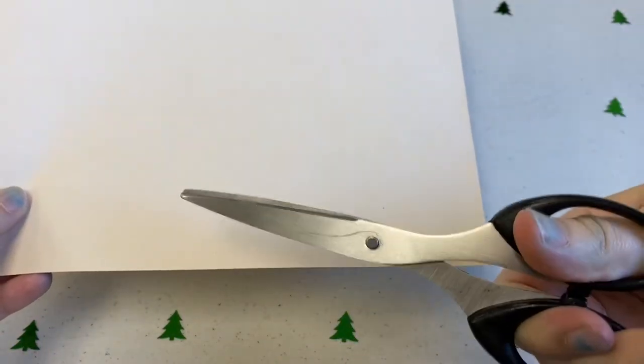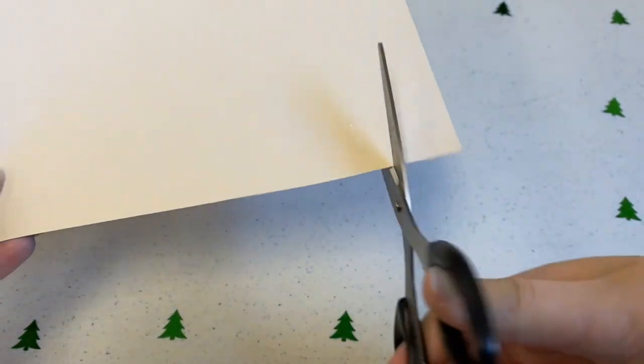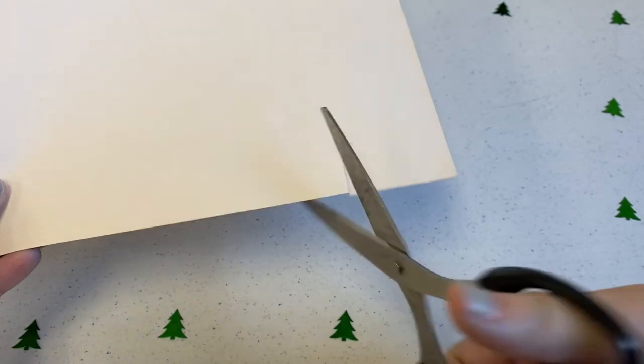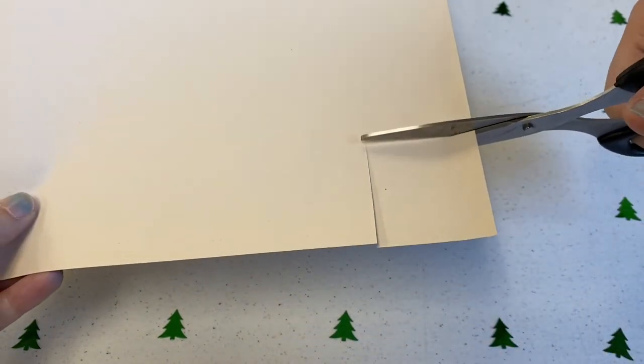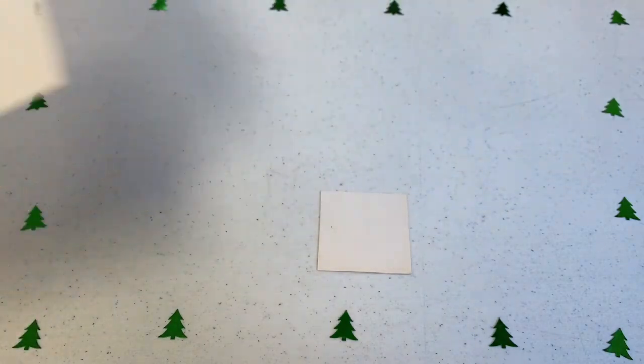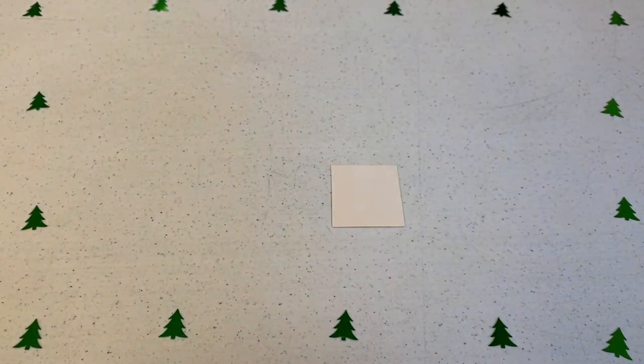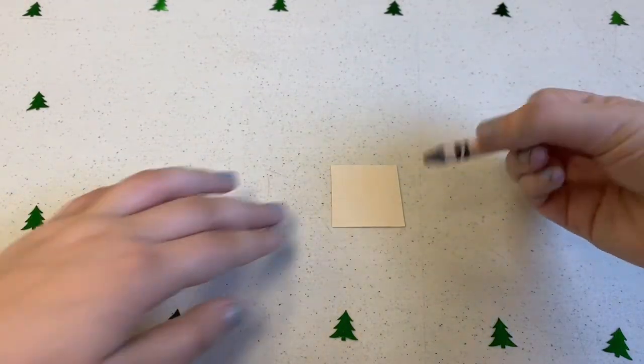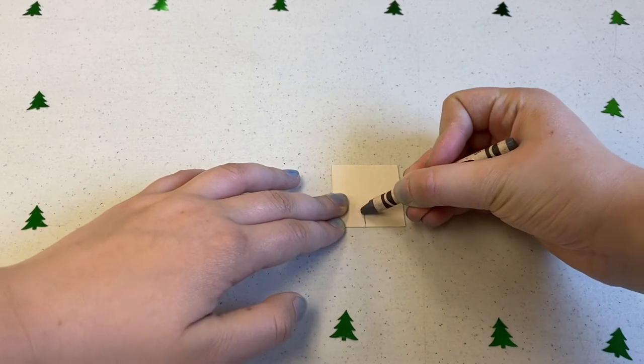Next, we will be cutting out a rectangle of white paper for the beaver's big teeth. Beavers have really huge front teeth so that they can chew through trees. Make sure to draw a line on your rectangle to show the two separate teeth.